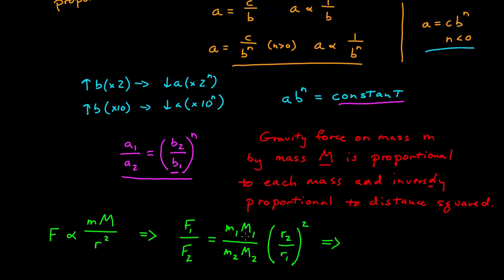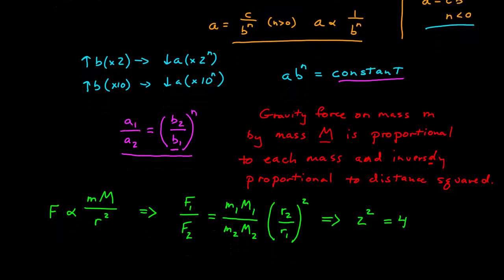If I have the same system, the masses are the same, but I've simply increased the distance between them by a factor of two, that means the ratio r2 over r1 is equal to two. This entire system just becomes two squared, or four.